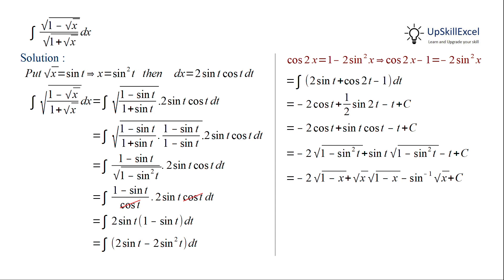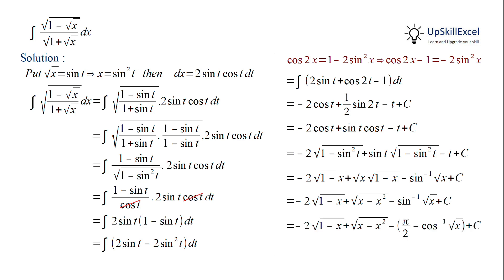We can also rewrite this answer in various other forms. In one way, we can combine the square roots in the second term and write it as √(x − x²). The second way is to write sin⁻¹ as π/2 − cos⁻¹, where π/2 is a constant that can be combined with c, giving the alternate result: −2√(1 − x) + √(x − x²) + cos⁻¹(√x) + c₁.